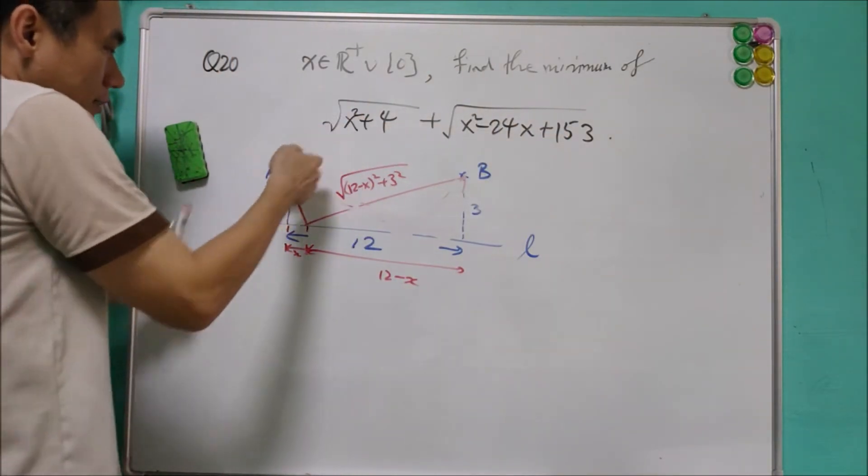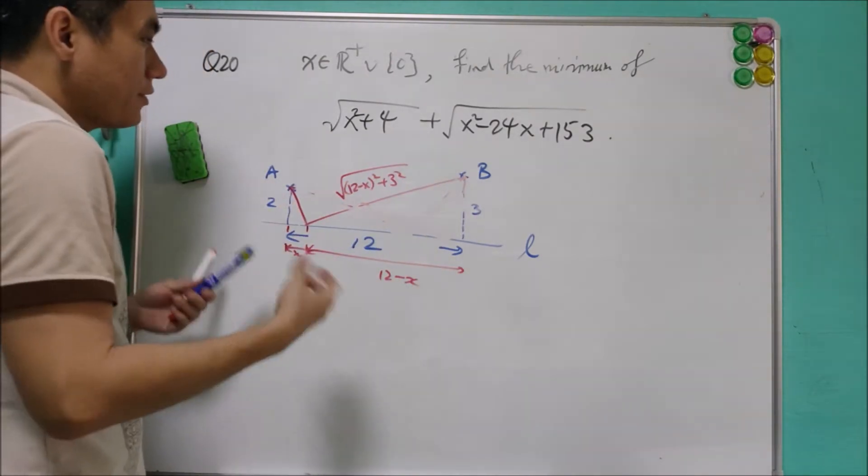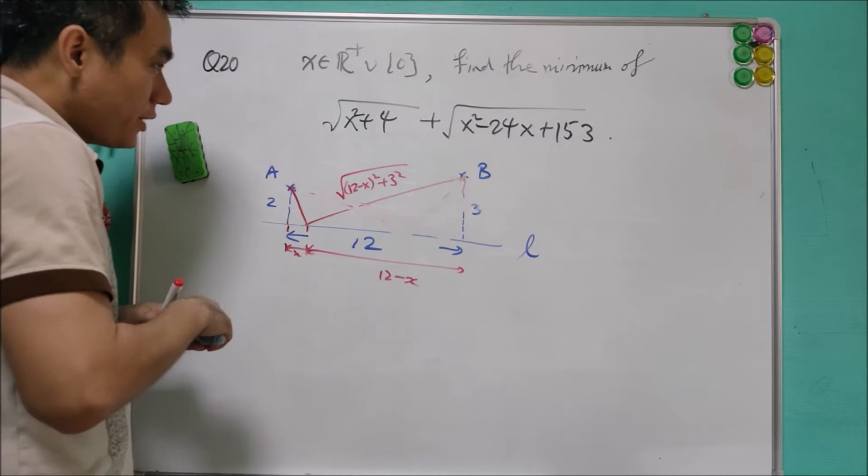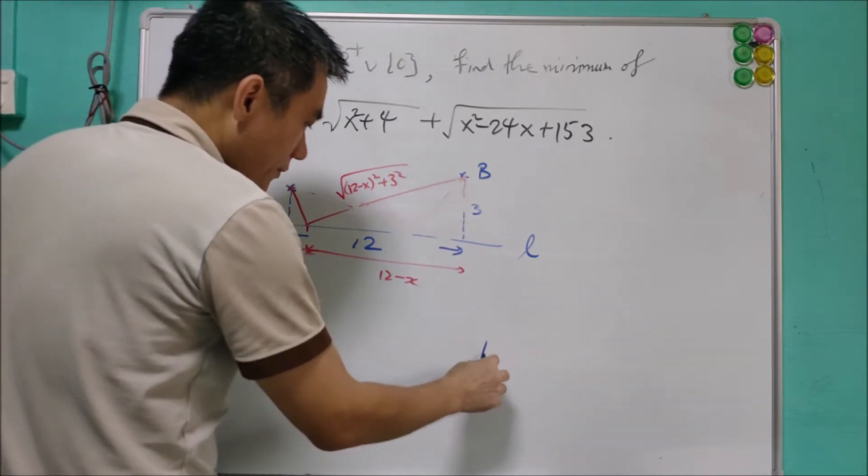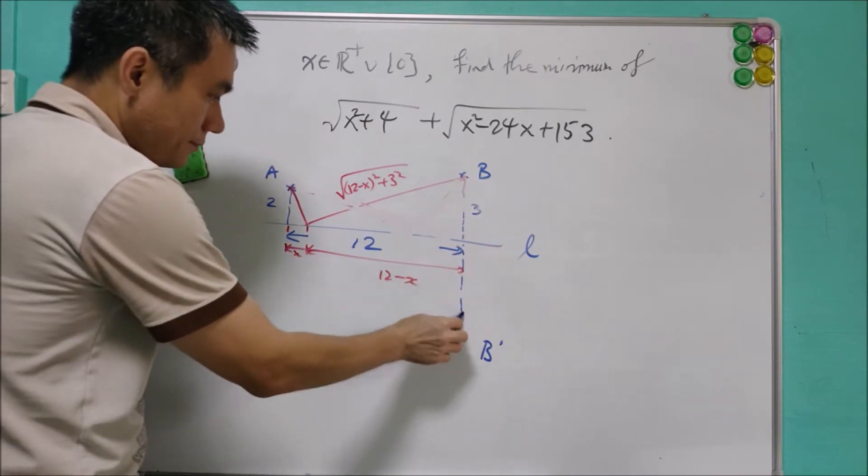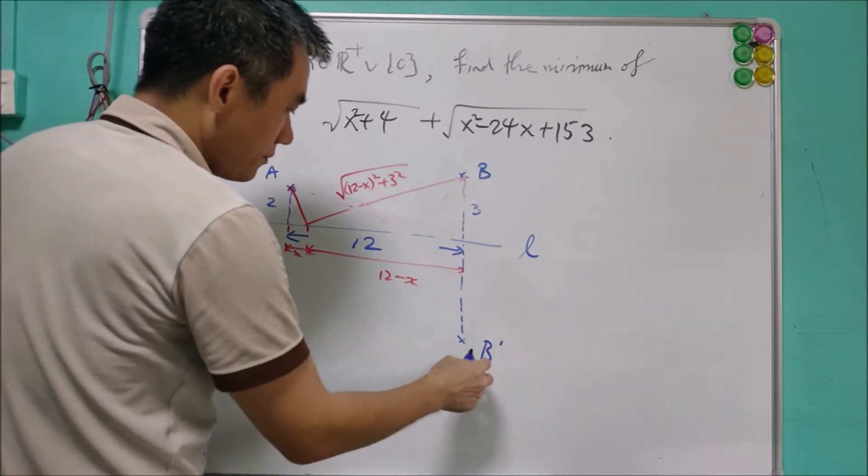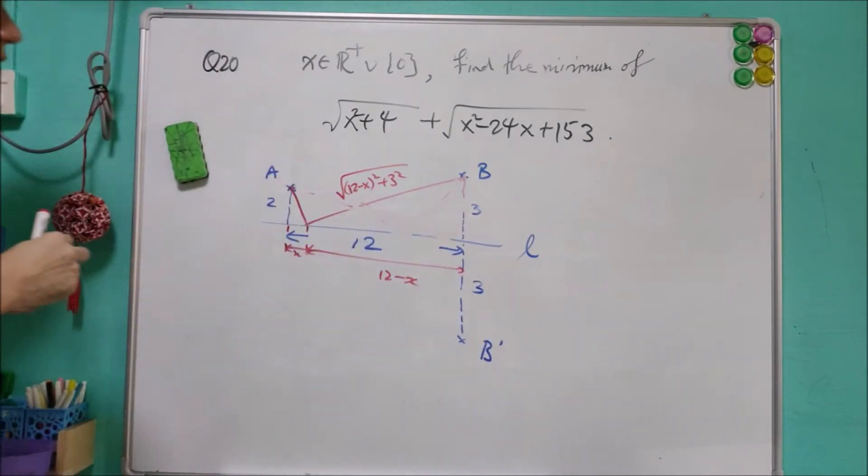Then how are you going to get the minimum distance here? I think you have learnt it before. The simplest way is just do a reflection. So build a point B prime, that is reflection of B about the line L. So this is B prime. And the distance B prime to L is again equals to 3.